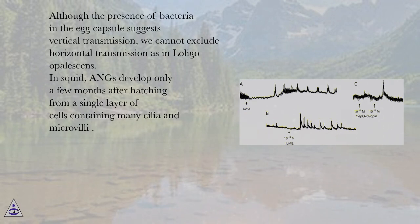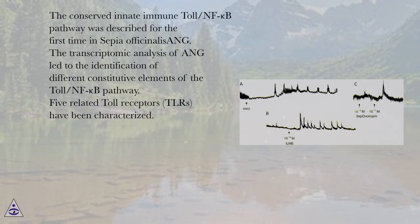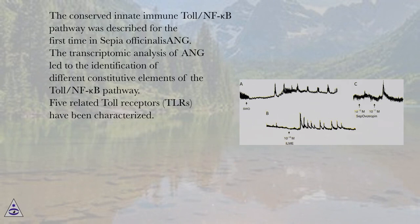In squid, AGs develop only a few months after hatching from a single layer of cells containing many cilia and microvilli. The conserved innate immune toll/NF-kappa-B pathway was described for the first time in Sepia officinalis. The transcriptomic analysis of AG led to the identification of different constitutive elements of the toll/NF-kappa-B pathway. Five related toll receptors, TLRs, have been characterized.